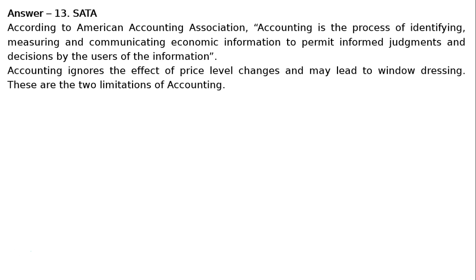Question 13: Define accounting and explain any two limitations of accounting. Answer 13: According to the American Accounting Association, accounting is the process of identifying, measuring and communicating economic information to permit informed judgments and decisions by users. Two limitations: accounting ignores the effect of price level changes, and may lead to window dressing.